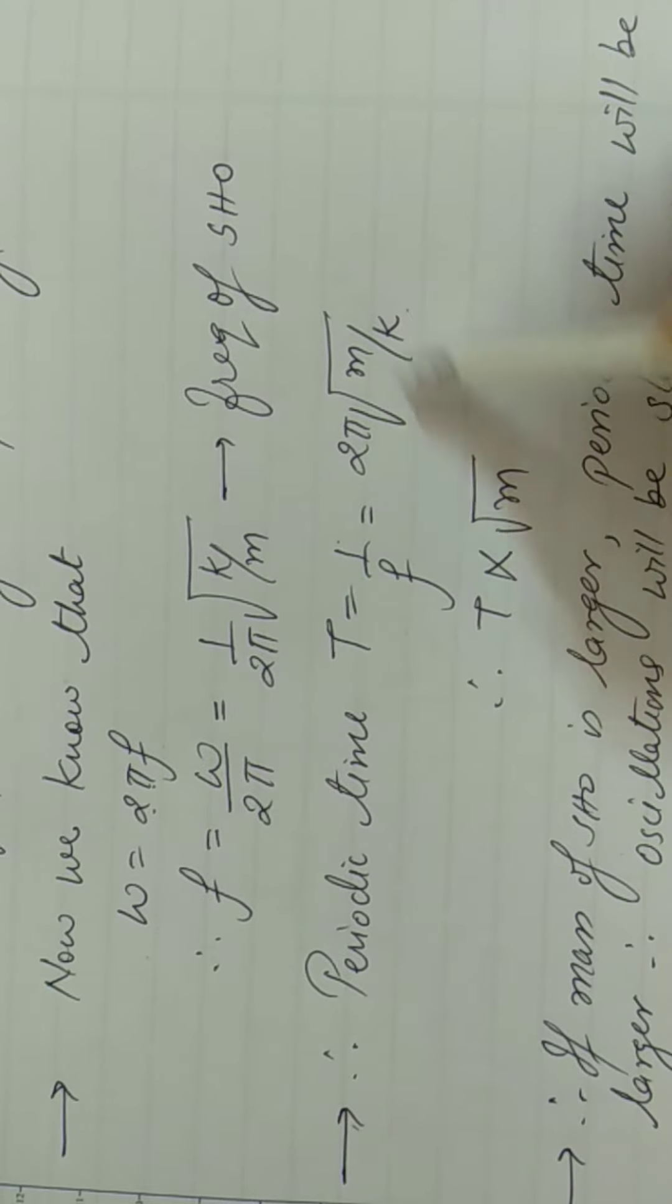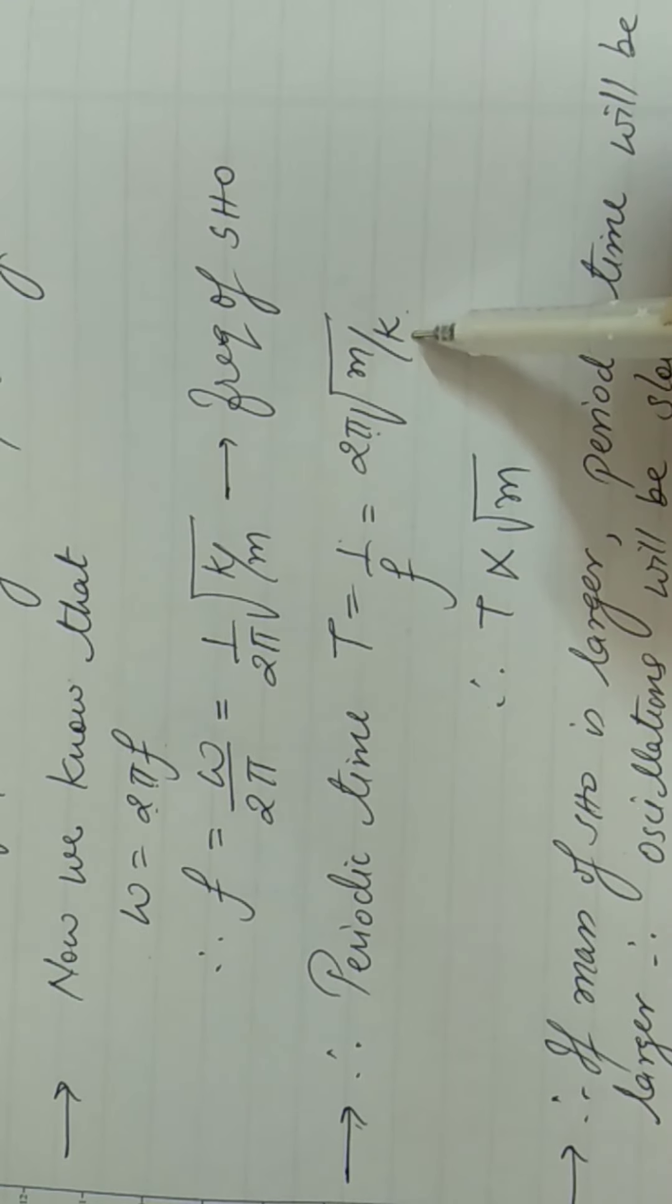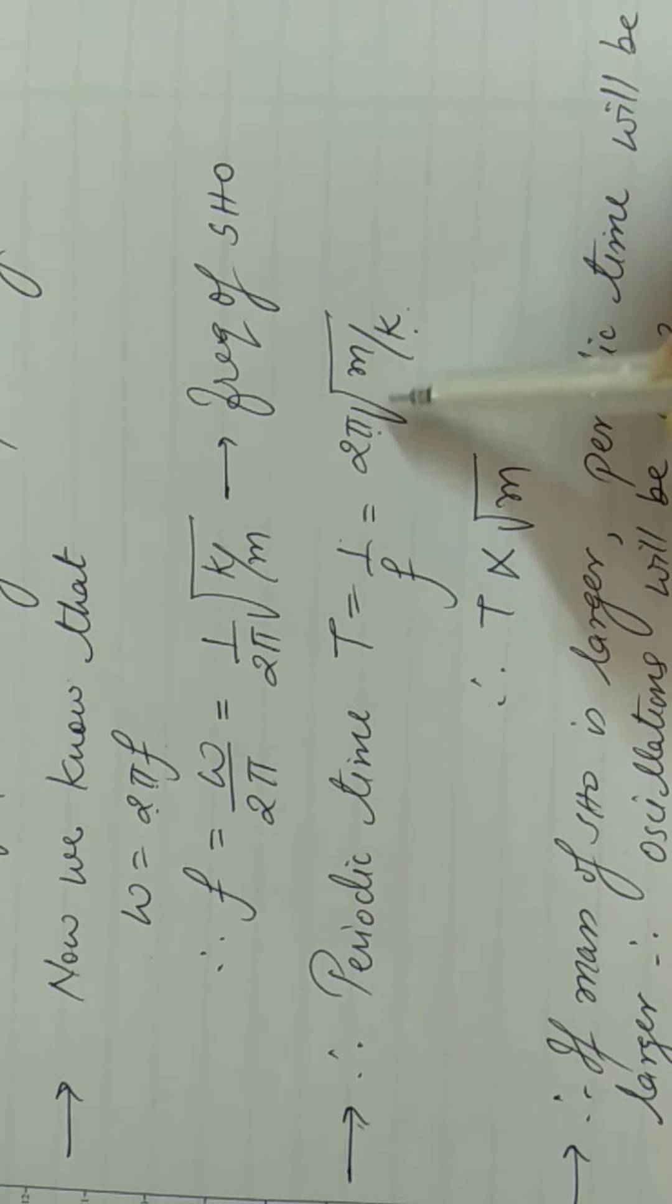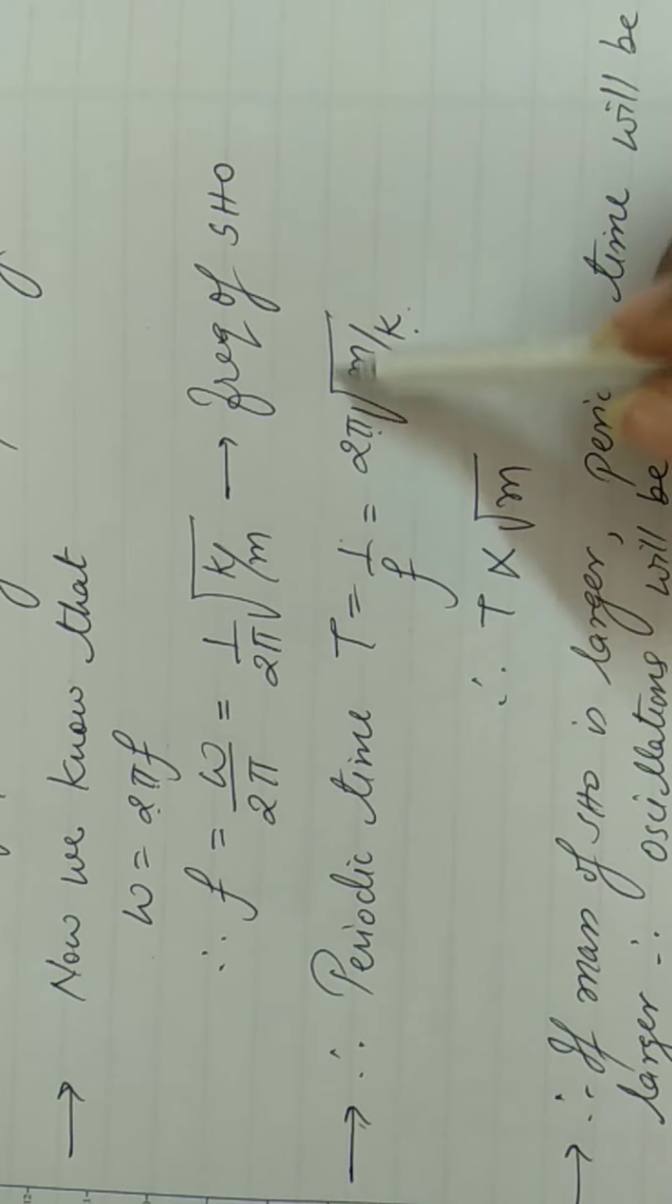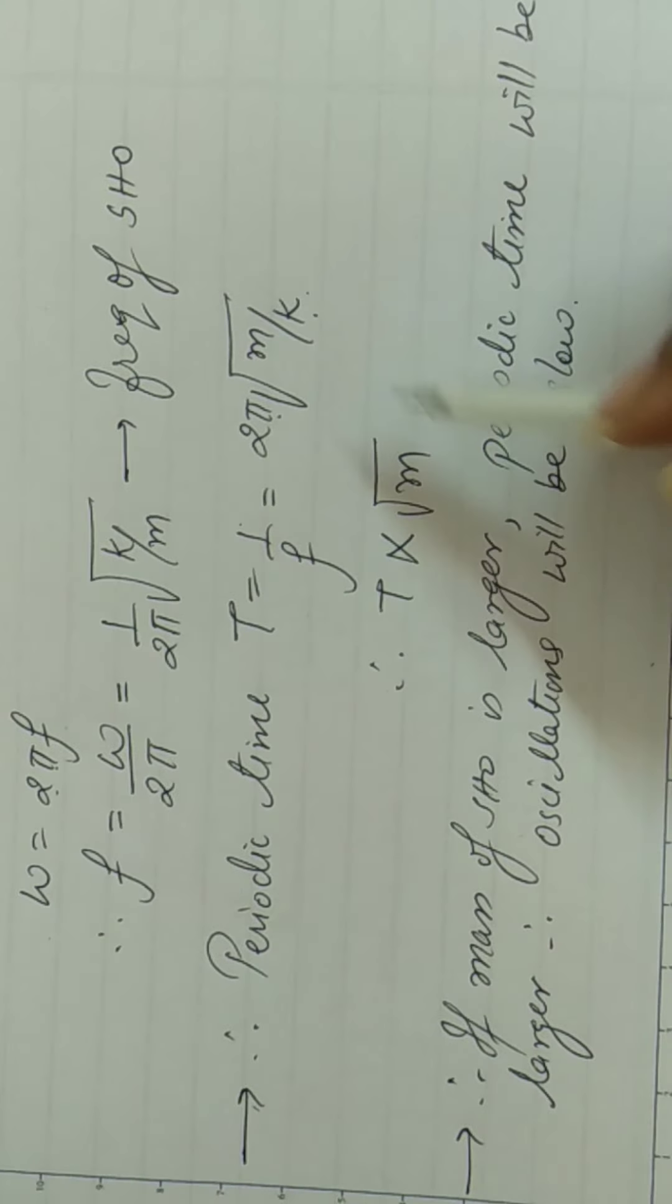Now if you see this equation, then 2π is a constant. This k is a constant. The only variable is mass, mass of the SHO. So I can say that periodic time is directly proportional to square root of mass of oscillator.